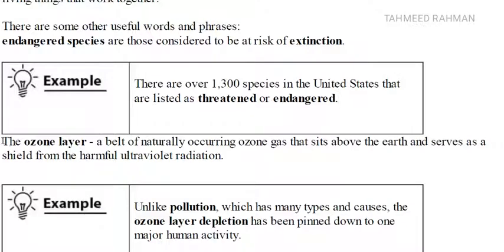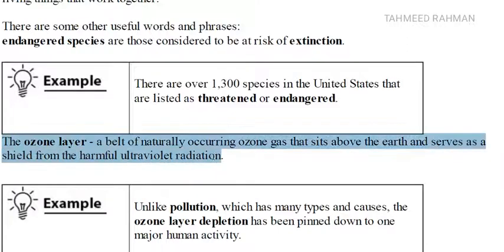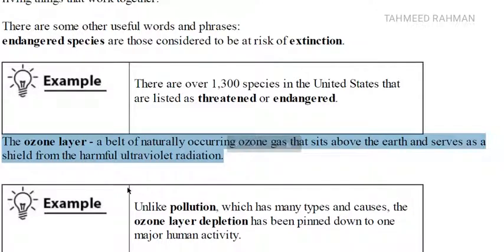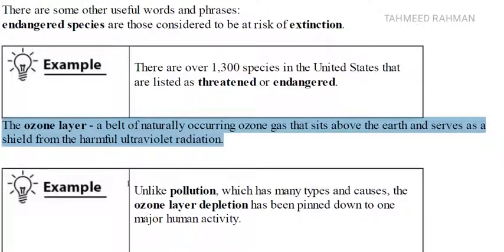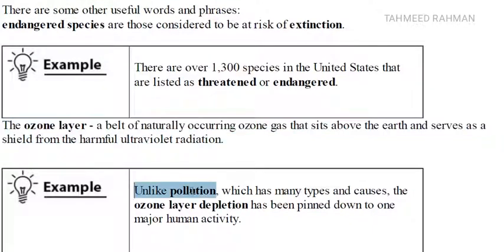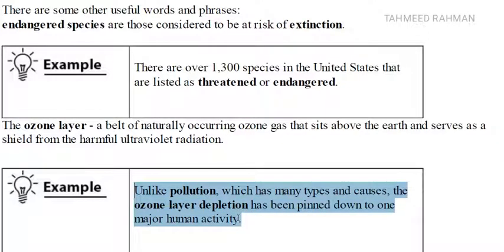Let's discuss some more terms related to climate change and the environment. The ozone layer is a belt of naturally occurring ozone gas that sits above the earth and serves as a shield from harmful ultraviolet radiation. Unlike pollution, which has many types and causes, ozone layer depletion has been pinned down to one major human activity.